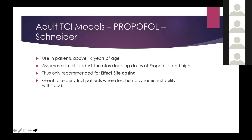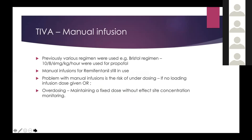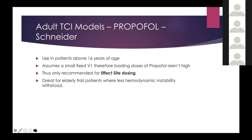The second propofol adult model is the Schneider model, used in patients above 16 years of age. It assumes a very small V1, meaning you don't need to give too much propofol to achieve a plasma-effect site concentration gradient. Schneider is quite popular, and by default it's what most people are using. The only recommended mode for Schneider is effect site dosing — we don't use it for plasma site — because of the small V1 assumption, we never end up giving too high doses of propofol. It's very good for very sick patients where less hemodynamic stability can be withstood.